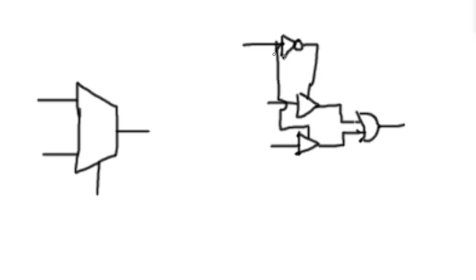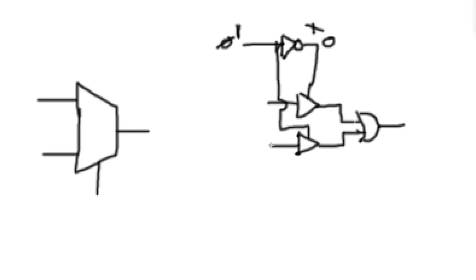With this configuration — and I know I drew that kind of poorly — with the input at zero, this output is a one, which means this buffer is enabled and this one is disabled, which means this input gets through and this one doesn't. But with the input being a one, this is going to be a zero, which means this buffer is disabled and this one is enabled, so this input is able to get through.